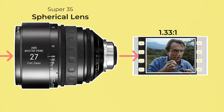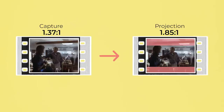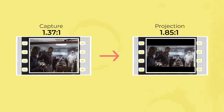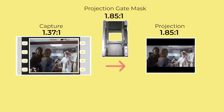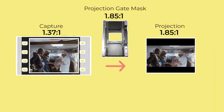When shooting Super 35 with normal spherical lenses, the frame can be used for taller aspect ratios like 1.33 to 1, or the top and bottom can be cropped to get widescreen aspect ratios like 1.85 or 2.40 to 1. Before digital, this crop would have been done by printing the final film to a different ratio with a letterbox, or by using a narrower plate that chopped off the top and bottom of the frame when projecting.